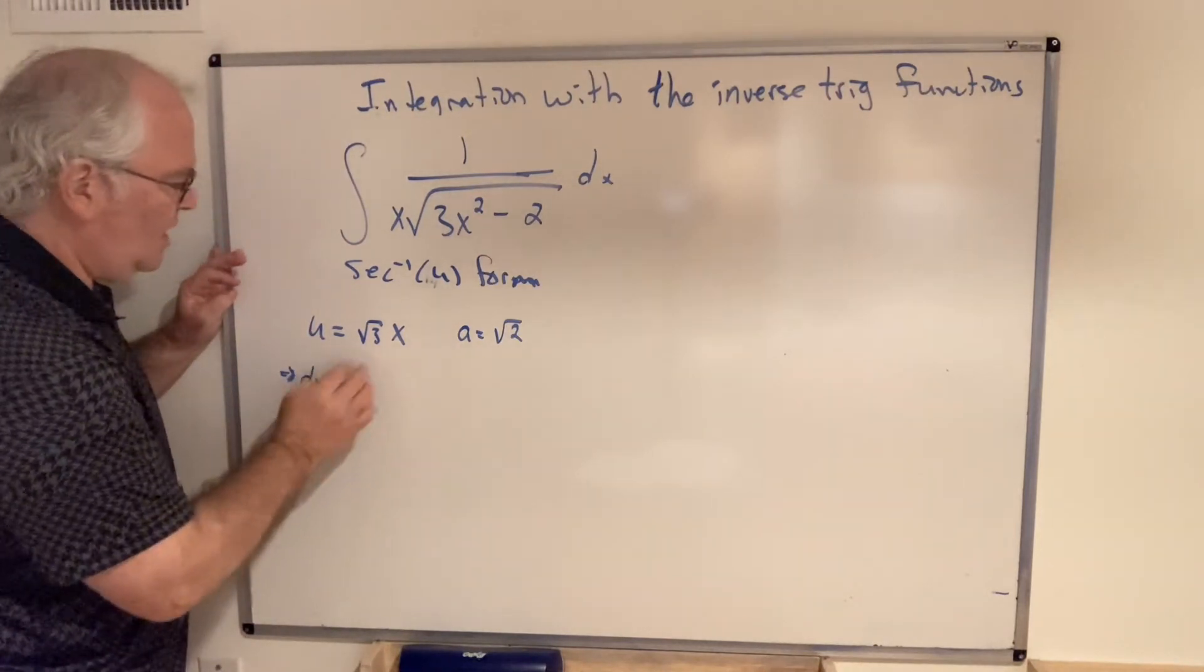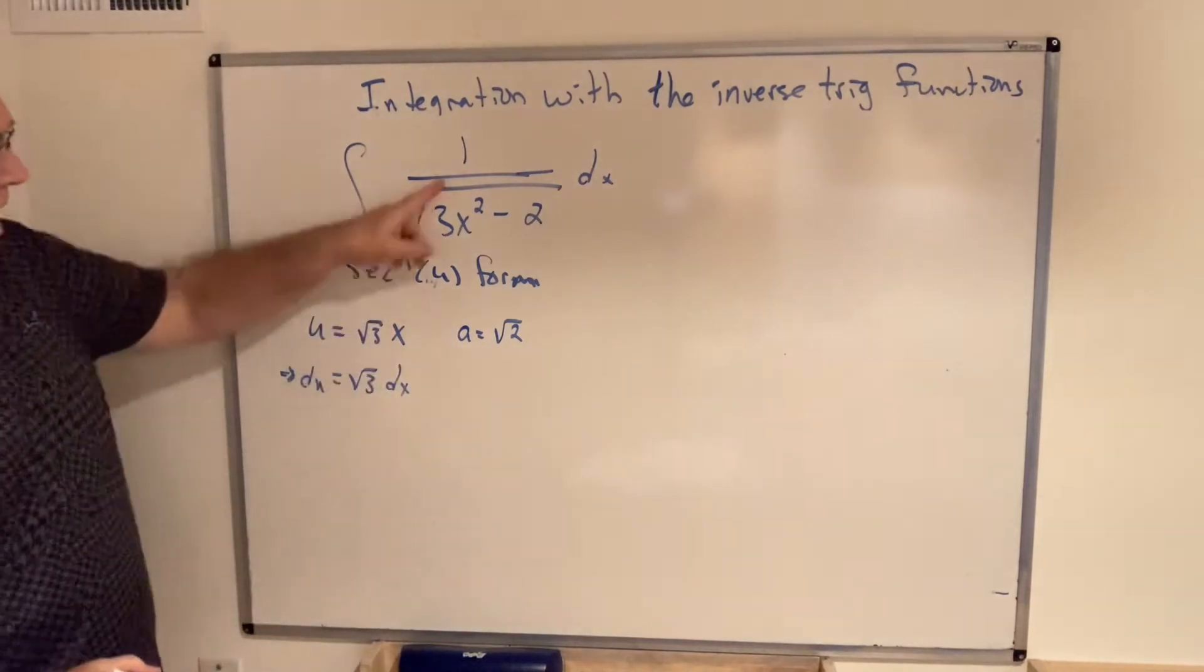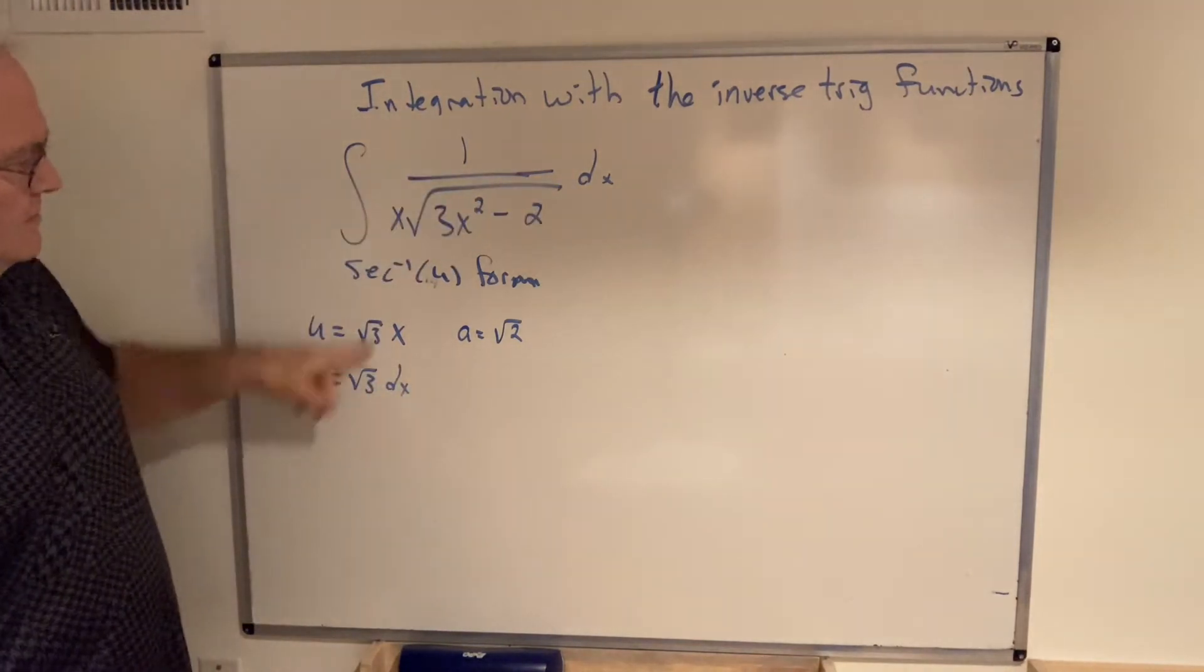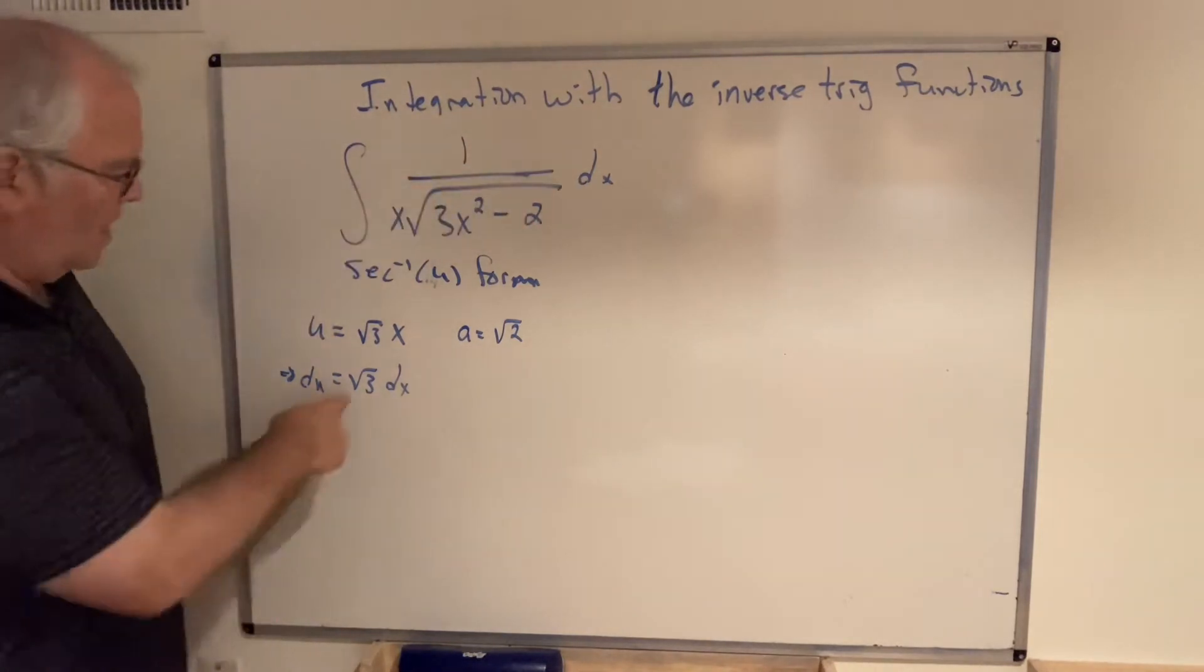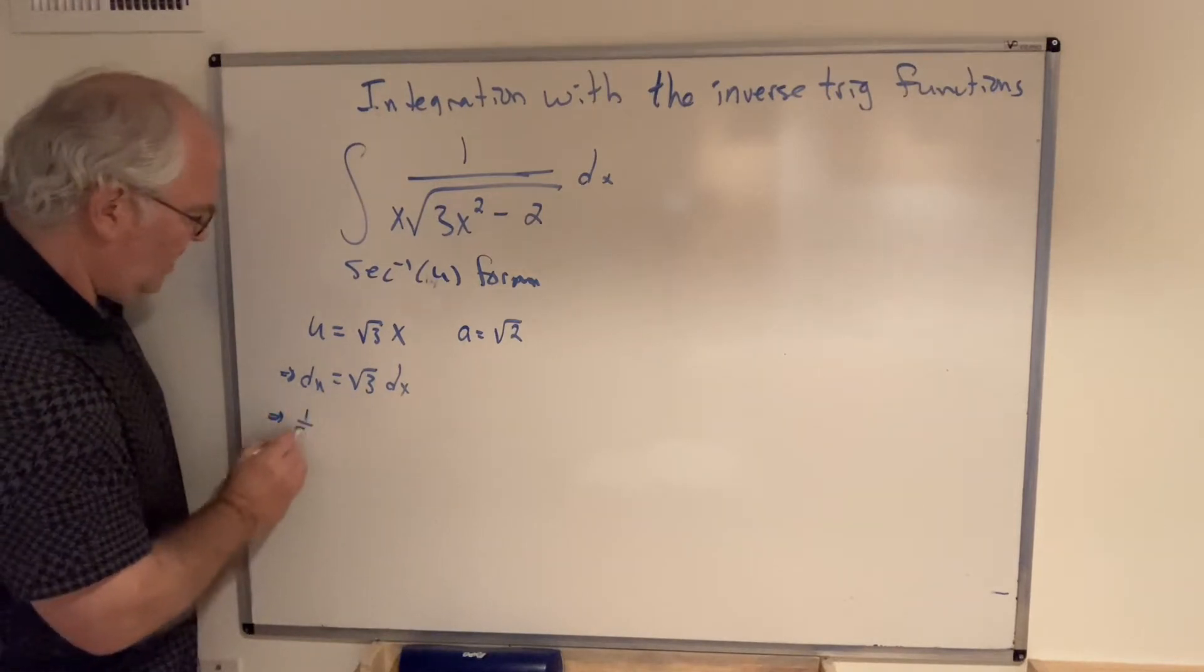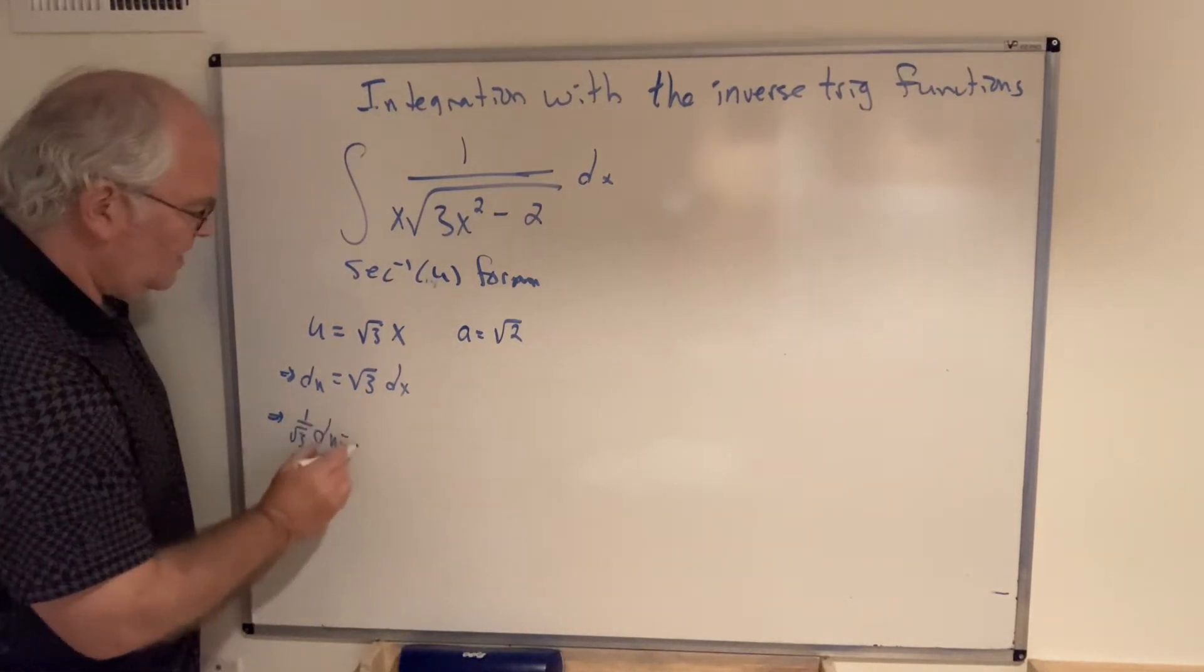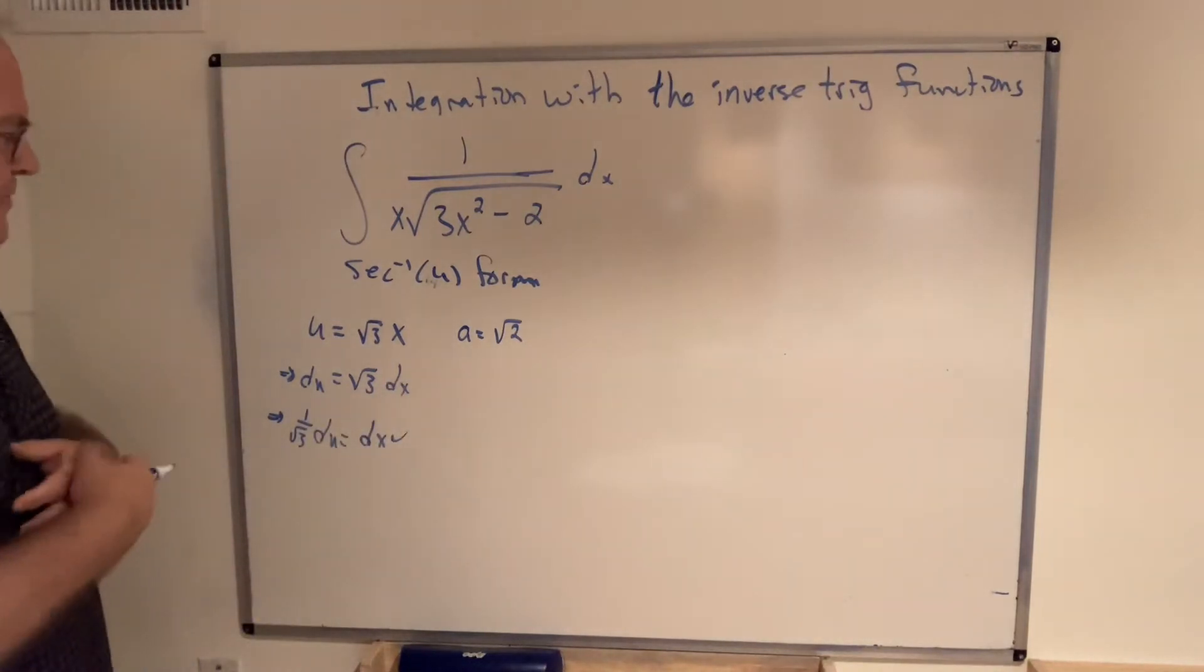And then we need the differential here. So the derivative with respect to x, we have the derivative here—it's the square root of 3. And I don't want that. I don't want √3 dx. I just want dx. So divide that out. This should not be a problem. That's a constant. 1 over √3 du is equal to dx. And the substitution is exact.